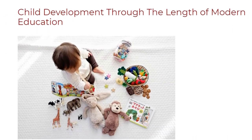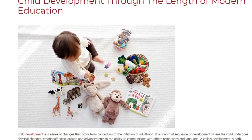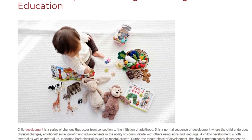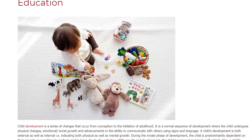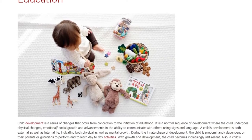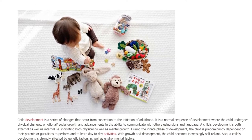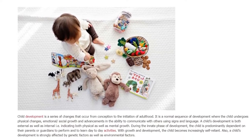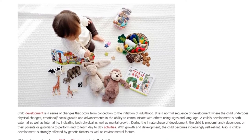Child Development Through the Length of Modern Education. Child development is a series of changes that occur from conception to the initiation of adulthood. It is a normal sequence of development where the child undergoes physical changes,